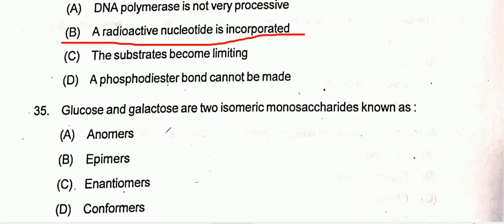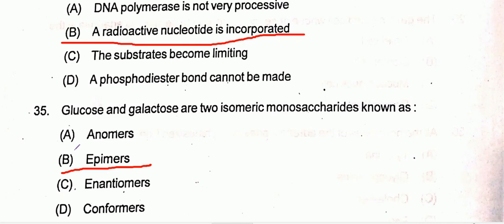Question thirty-five: glucose and galactose are two isomeric monosaccharides known as epimers, so option B will be the correct one. In this video we have discussed questions one to thirty-five. Since the total question paper consists of 70 questions, we will discuss questions 36 to 70 in another video.